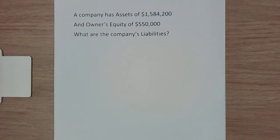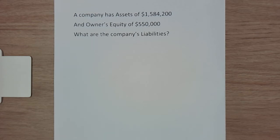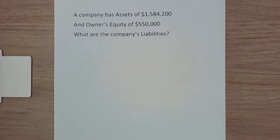Welcome to another accounting video. I'm your host Professor Capco. In today's video we're going to see how we can figure out what a company's liabilities are if all we know are the company's assets and the amount of the owner's equity. You might see a question like this: a company has assets of $1,584,200 and the owner's equity is $550,000. What are the company's liabilities? At first glance this seems like an impossible question to answer.